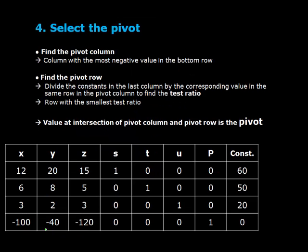Step 4: Select the pivot. First, we find the pivot column. This is the column with the most negative value in the bottom row. Next, we find the pivot row. To find the pivot row, we divide the constants in the last column by the corresponding value in the same row in the pivot column. This gives us the test ratio. The row with the smallest test ratio is our pivot row. The value at the intersection of the pivot column and pivot row, 15 in this case, is our pivot.